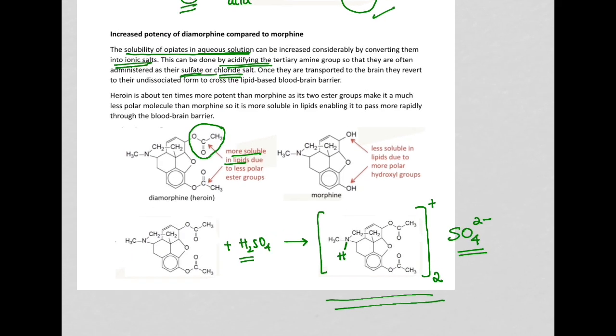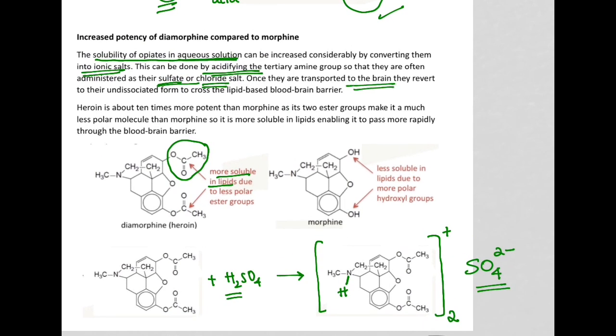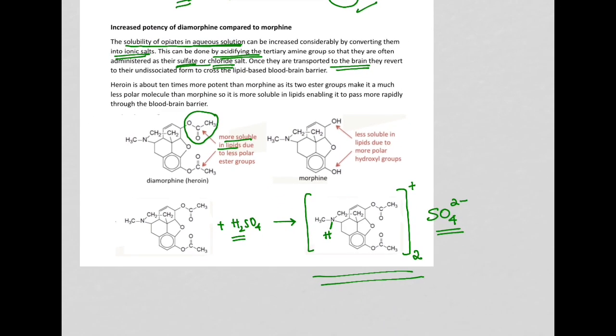Once it reaches the brain, it's going to revert back to its undissociated form. In the brain, it's going to go back into this form. This one is largely hydrophobic, so it's going to cross the blood-brain barrier easily. This one is largely hydrophilic, so it's going to travel very easily into the blood up to the brain.